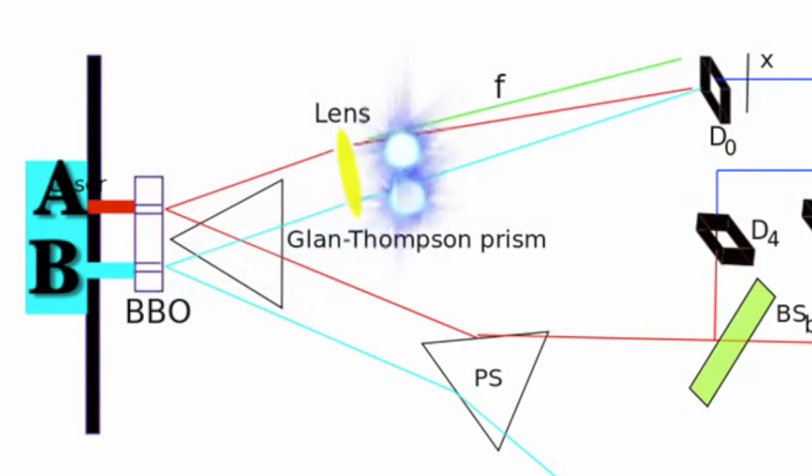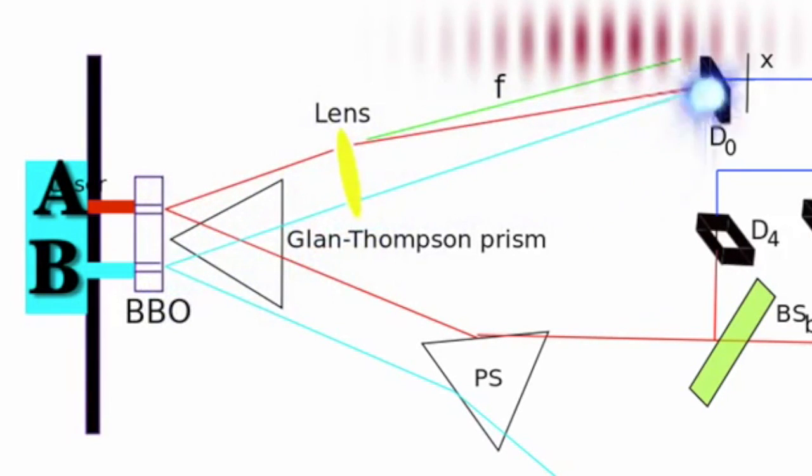So because of the lack of knowledge we would have about the system, the particle would act in a way as if it goes through both, becoming the wave of possibilities it could have been, instead of one of these possibilities, if we knew the definite path information.